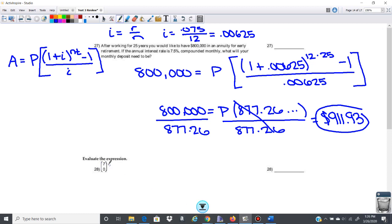The next problem is really simple. This is just combination formula. So nCr in your calculator, or it would be n factorial over n minus r factorial, and then r factorial.